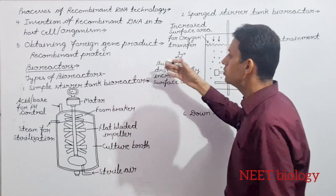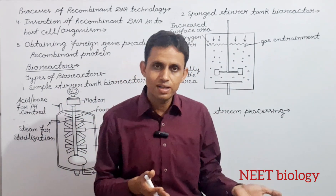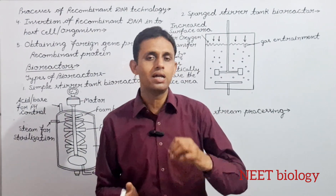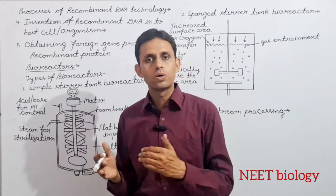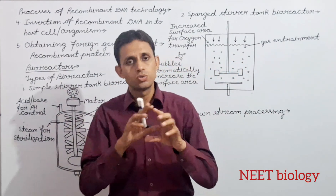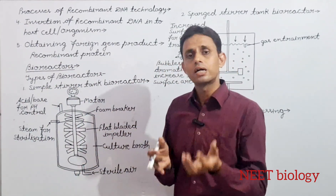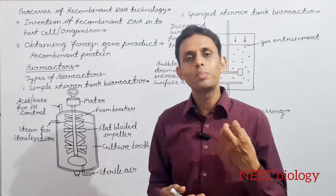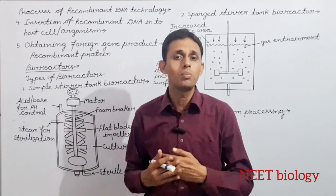Next step है obtaining foreign gene product। जब transformed cells को select कर लेते हैं, तो सबसे पहले उन्हें laboratory scale पर छोटे culture में grow करवाते हैं। उसके बाद उन्हें large vessels या large tanks में shift करते हैं जिनका volume 100 से लेकर 1000 liters तक होता है।